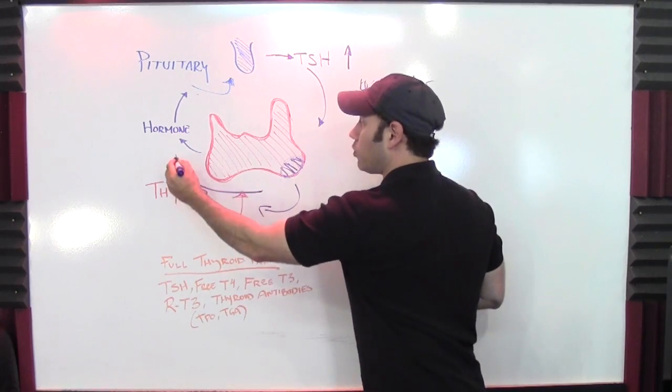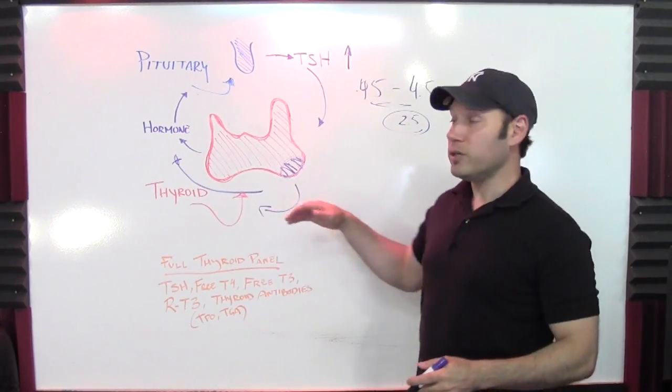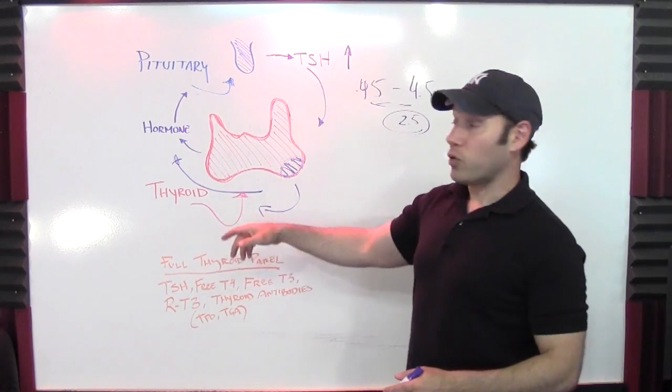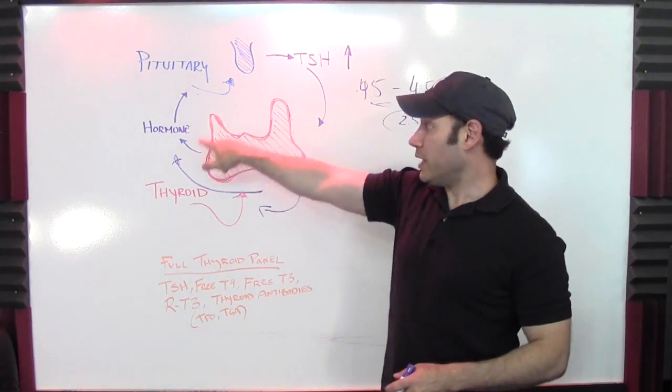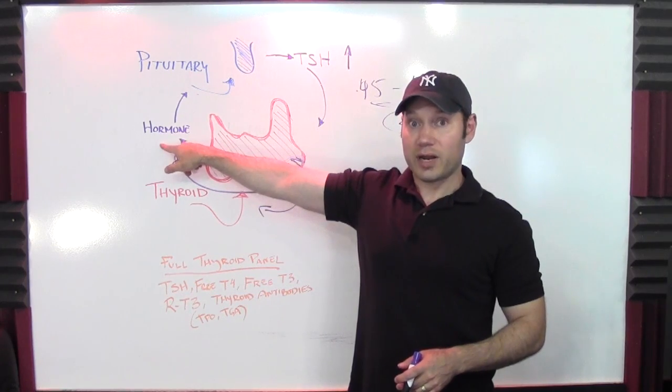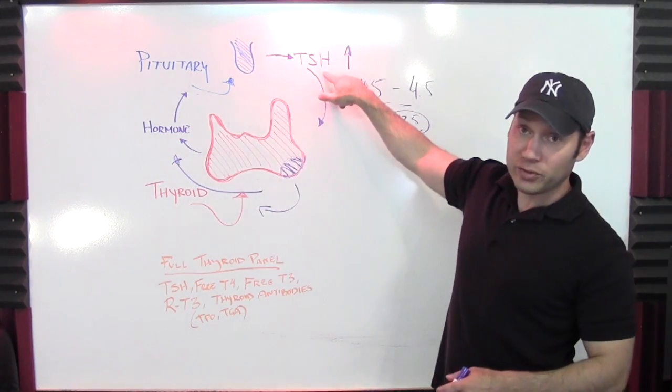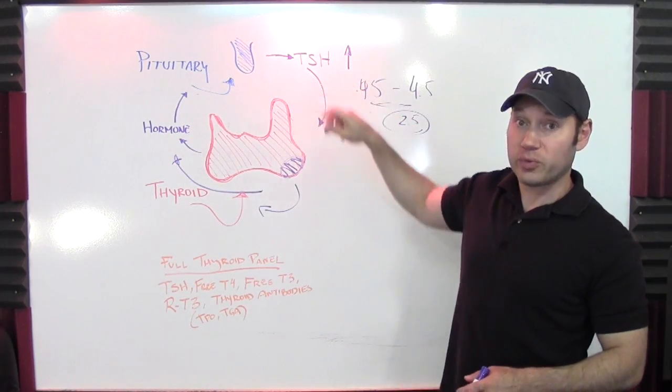So you're going to end up with more thyroid hormone for a period of time in your bloodstream in circulation. Of course, what is that going to do to TSH? Your pituitary gland is going to sense the higher thyroid hormone and turn down TSH. It's the opposite of what it should be.